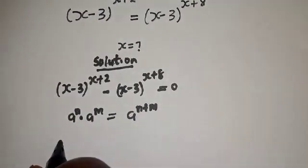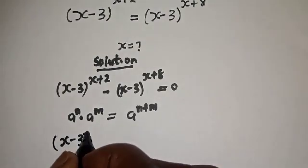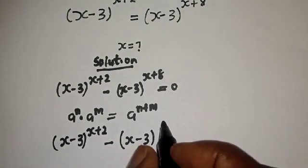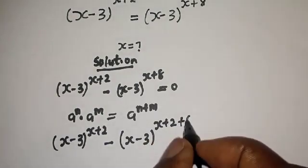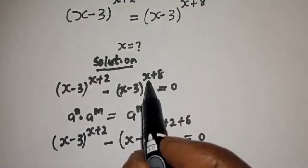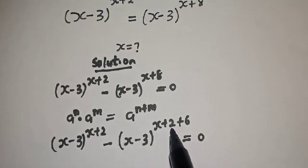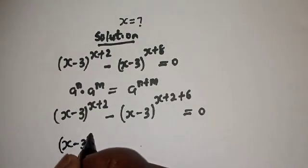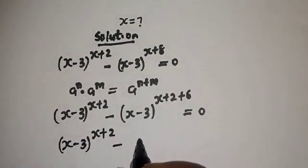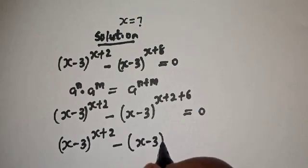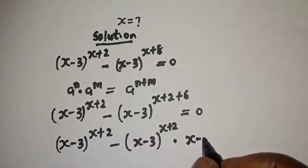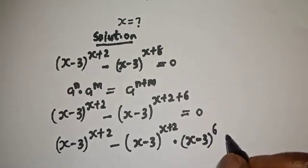Then from this equation, we have x minus 3 raised to the power x plus 2, minus x minus 3 raised to the power x plus 8, equals 0. Because x plus 8 is the same thing as x plus 2 plus 6. So this becomes x minus 3 raised to the power x plus 2, multiplied by x minus 3 raised to the power 6, equals 0.